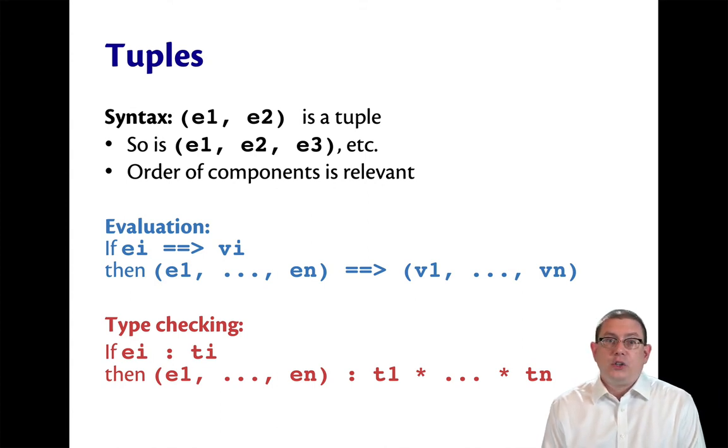We call a tuple with two components a pair, a tuple with three components a triple, and you could go up to quadruple and quintuple and so forth. But in practice, we don't usually use more than two or three components in a tuple.